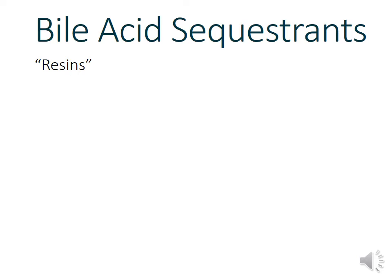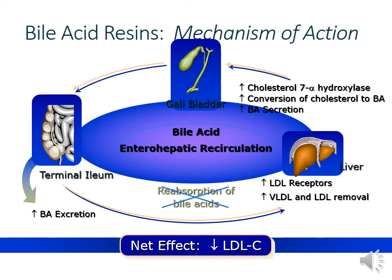Bile acid sequestrants are resins that inhibit absorption of cholesterol from the GI tract. Instead of working at the enterocyte like ezetimibe, these resins actually bind directly to cholesterol and bile acids in the GI tract as anion-exchange resins, then get excreted out through the feces. Notably, there is no systemic absorption of these drugs.